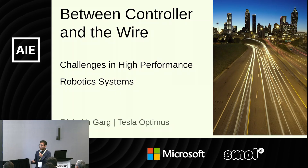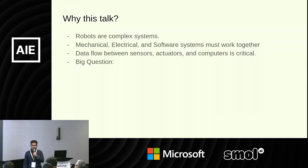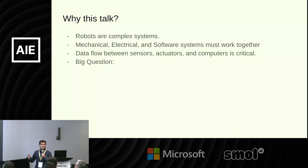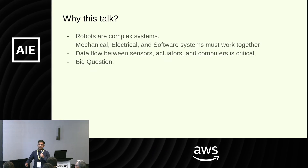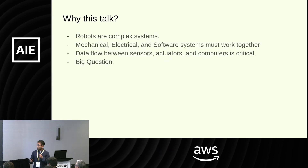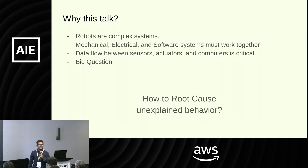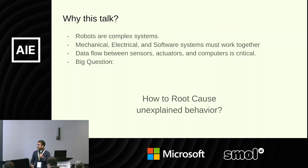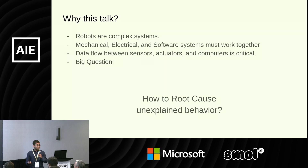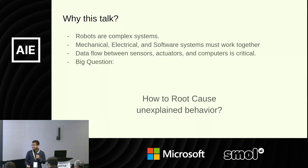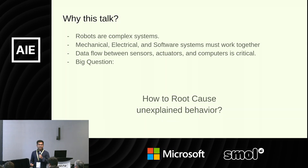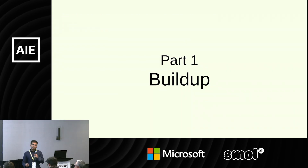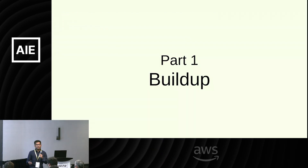Along the way, we'll try to design a very small robot. So why this talk? Robots are complex — so many systems, so many different software components. And yet we're focused on one big question: when things go wrong on the robot, when you don't see that motor move, what's the root cause? Is it the policy that is not giving the command, or is it the software system? This is a question I grapple with almost every day, and I want to talk about what I've seen and how to diagnose these issues.